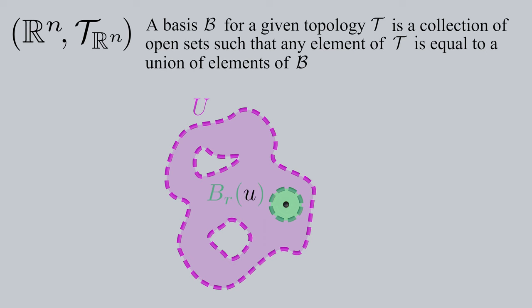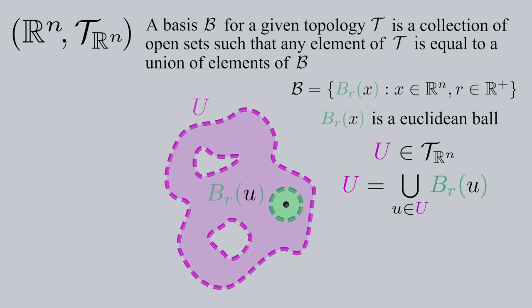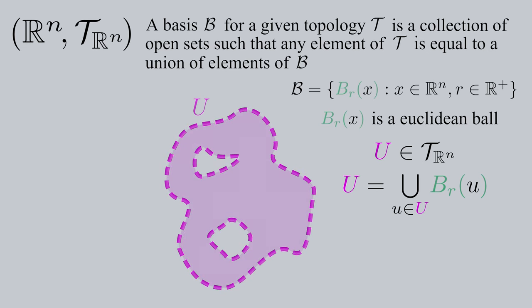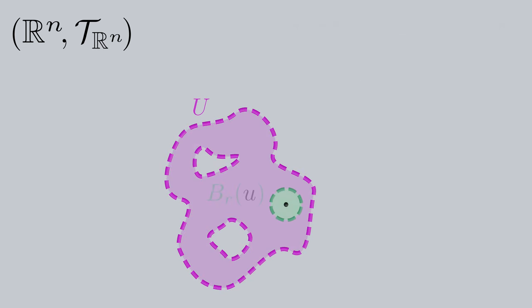If our basis Fancy B is the set of all Euclidean balls of Rn, our element U of tau sub Rn must equal a union of open Euclidean balls. This means we fill our subset U with a bunch of balls that are completely contained in U, and then when we unify these balls together, the resulting set is U.